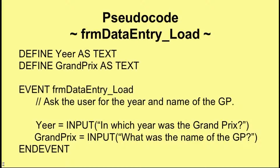Now we come to the event itself — form data entry load. This event asks the user for the year and the name of the Grand Prix. So we have: year equals input 'in which year was the Grand Prix?' — that information goes into the memory location year. The next line asks for the name of the Grand Prix and that goes into the variable Grand Prix. So that event just takes data in.